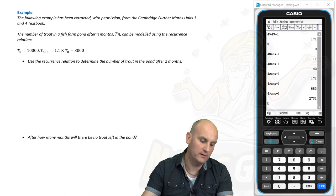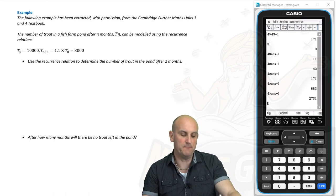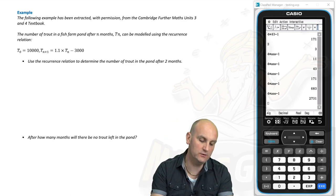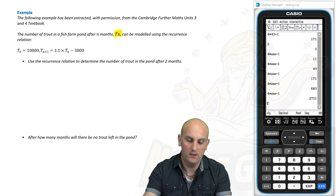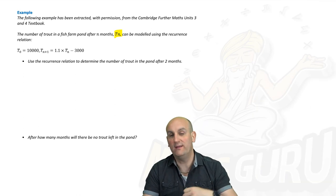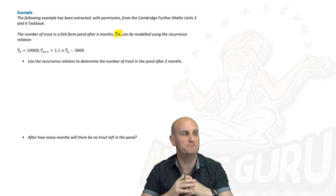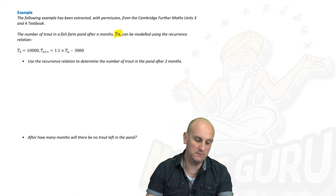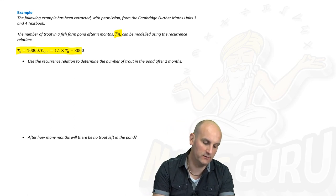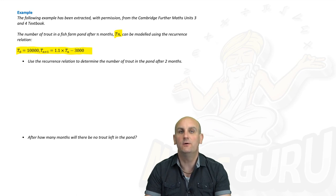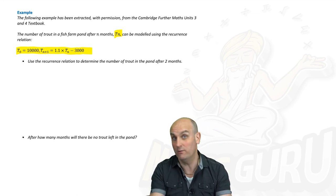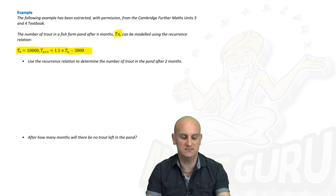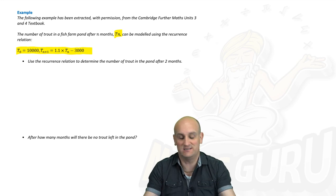And the next example. The number of trout in a fish farm pond after n months T_n. Now notice here they're trying to trick us. We get so used to in further maths just being given V_n or V_{n+1} that when they throw the letters it tends to throw us. Don't care where it comes from. The important thing is the little n and the little n+1 can be modelled using the following recurrence relationship. So T_0, well V_0 meant the first term, T_0 means the first term. T_{n+1}, the next term, is equal to 1.1 × T_n - 3000. Don't worry about the T, it's just the same.